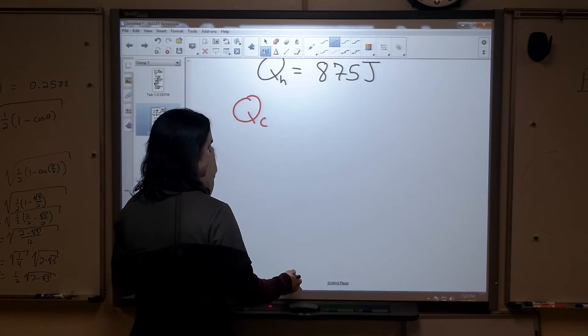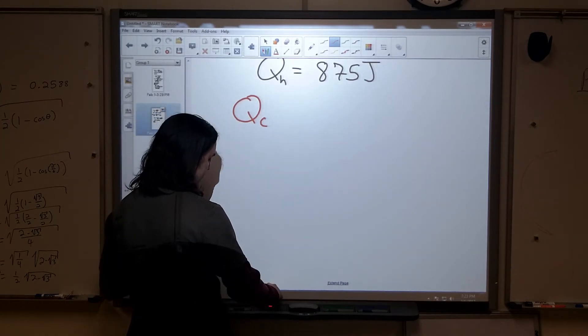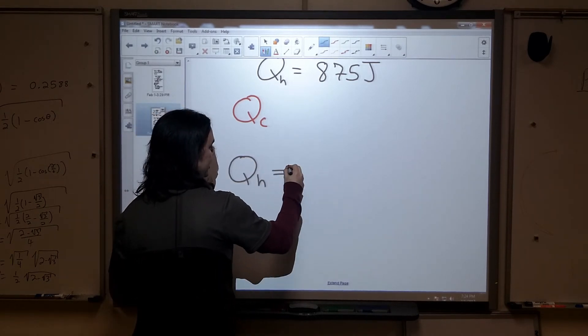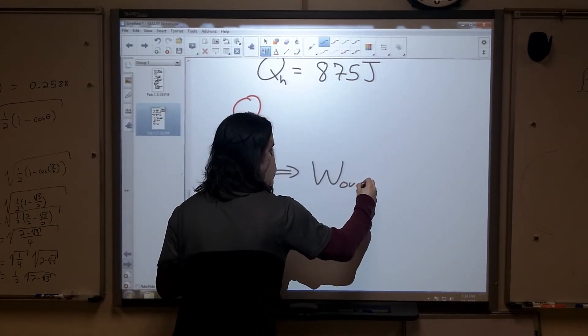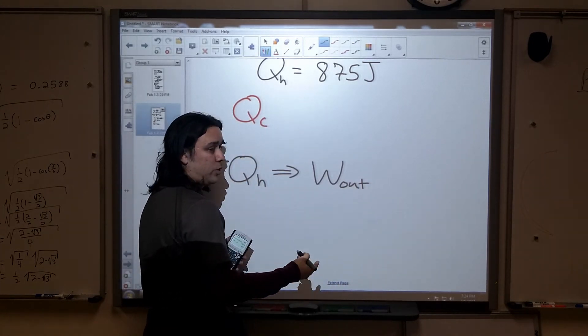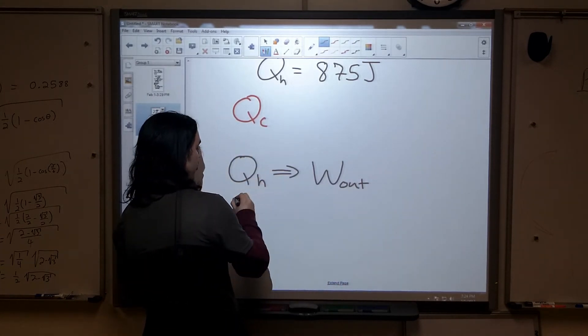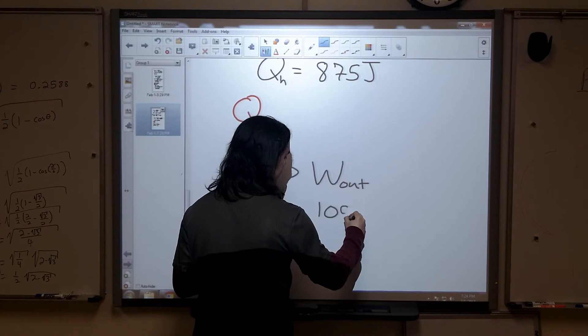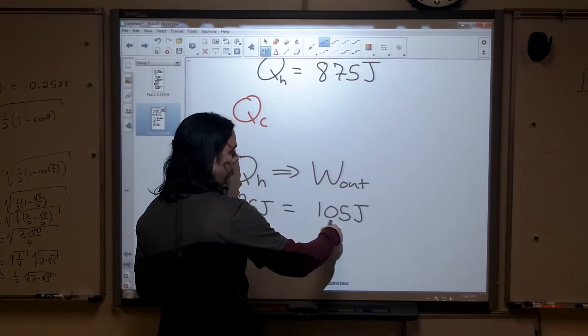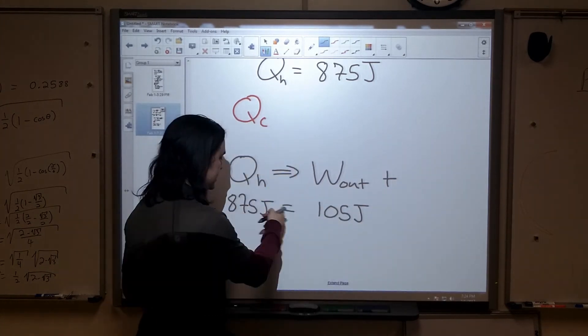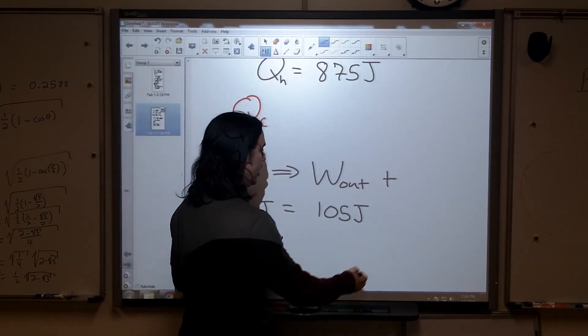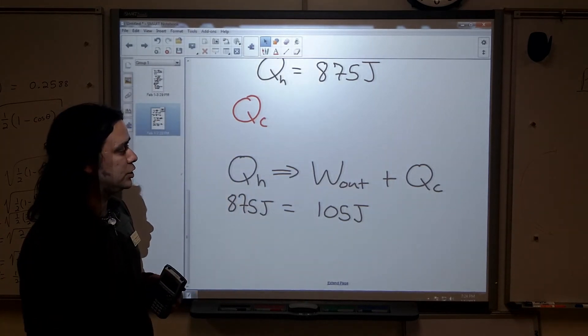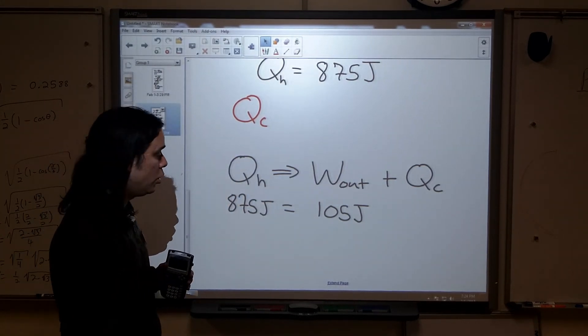Now with energy conservation, what we're going to find is the amount of energy we take in is going to be then put into the work that we get out. Since we neither create nor destroy energy, if we took in 875 joules and we know 105 joules of that went into work, the energy that is missing has to go somewhere. It becomes waste energy, waste heat I should say, that is then rejected into the cold reservoir.